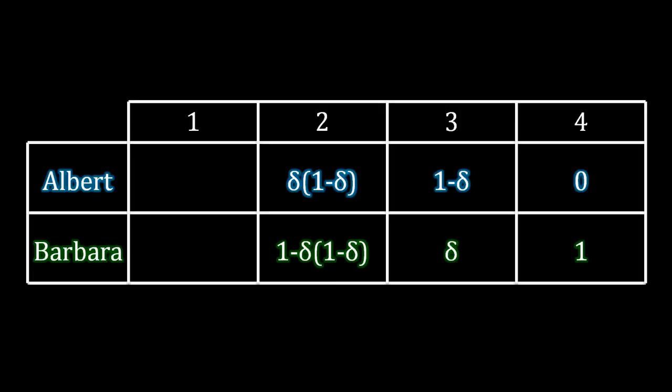Now it is stage one. This is Albert making an offer to Barbara. Albert knows how much Barbara will receive if she rejects. Barbara will receive one minus delta times one minus delta in the next stage. But there's going to be another period of delay between stages one and two, which means that Barbara is willing to accept an amount that is at least as big as delta times one minus delta times one minus delta. That's just Barbara's value for the second stage times delta to incorporate the time delay between periods one and two. Meanwhile, Albert will receive the rest for himself. He doesn't want to make any needless concessions to Barbara.